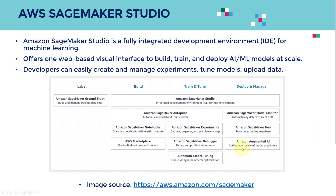You can also use Amazon Augmented AI, where you will be able to add human review for model predictions. Think of this as having AI along with humans — for some predictions where the AI has very low confidence and is not very accurate, you could have humans in there reviewing what the AI is predicting, so you can come up with much better performance afterwards.